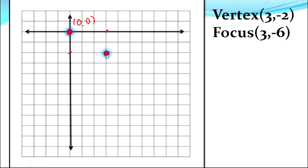Now for the focus: the coordinates are (3, -6). The x-coordinate of the focus is the same as the vertex, positive 3. The y-coordinate is negative 6, which is further down. The focus is situated below the vertex in the fourth quadrant area.